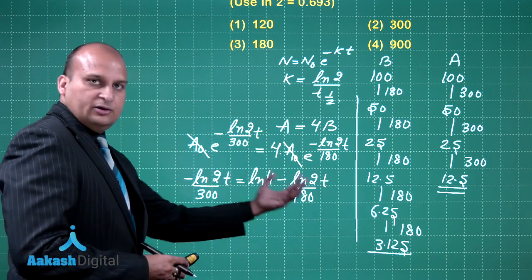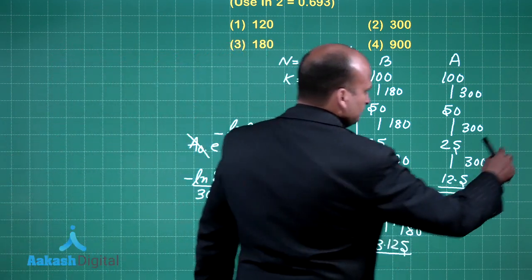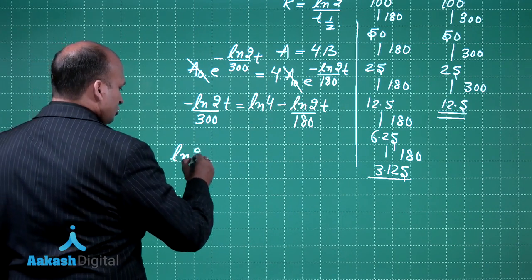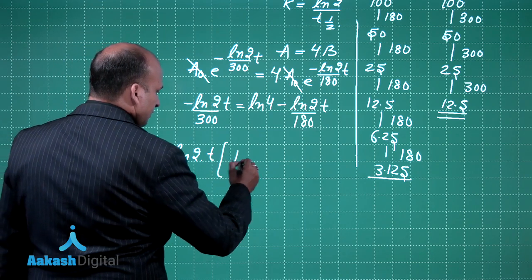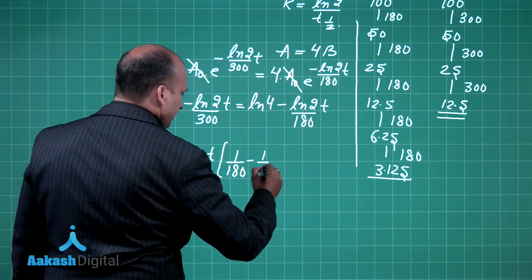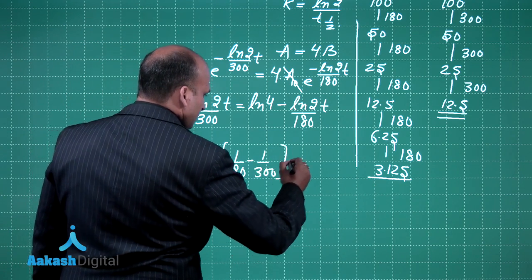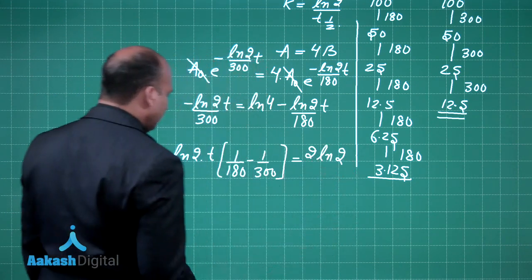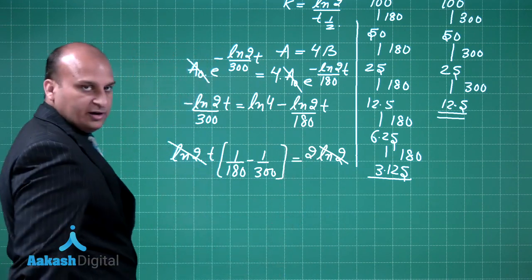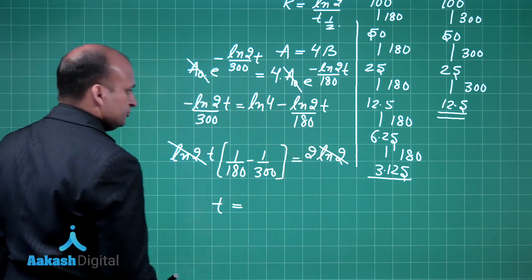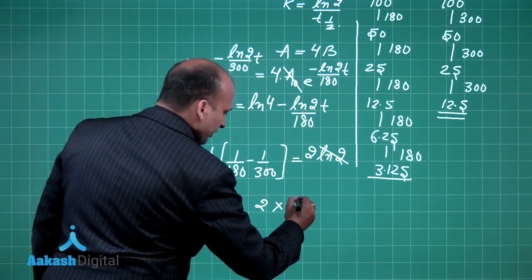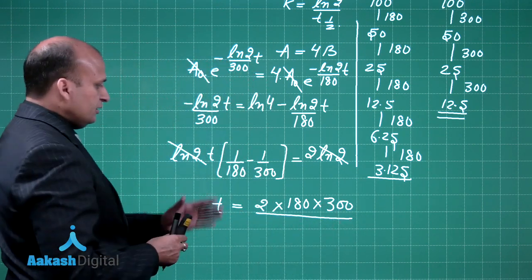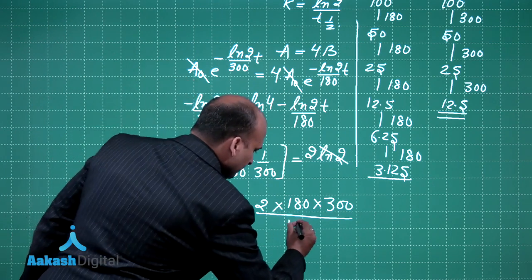Now this thing goes on the left, you will be getting ln 2 T times 1 by 180 minus 1 by 300 is equal to ln of 4. Don't you think we can write ln of 4 is 2 ln 2. So ln 2 gets cancelled out. So what is the value of T now?